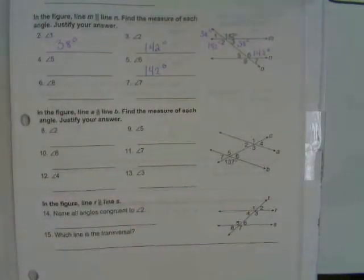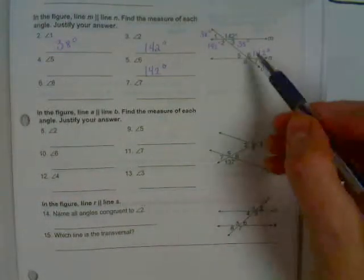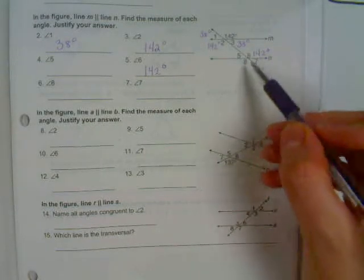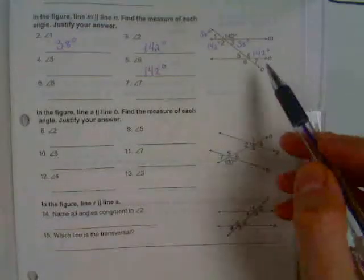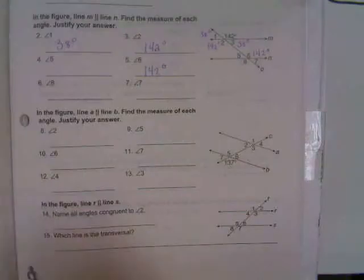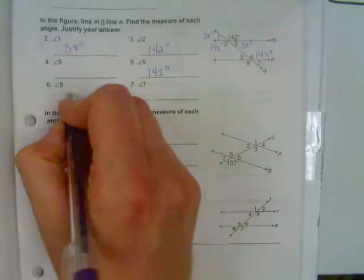Then you can use those ideas that we used around the top now to fill in the bottom. 8 is vertical to it, across from that angle.